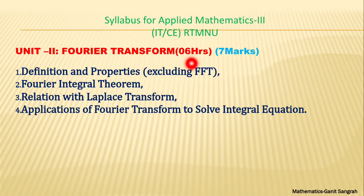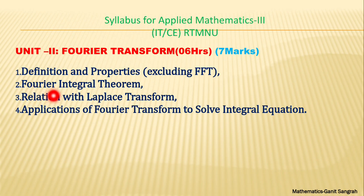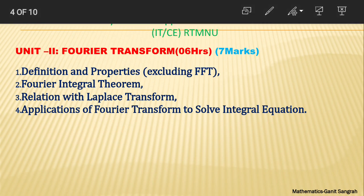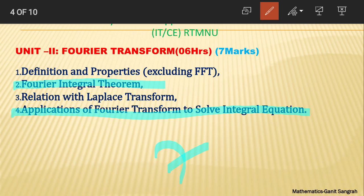In Fourier Transform, only one question comes — one in the either part and one in the or part — and this unit is for 7 marks. There are four topics: definition and properties of Fourier Transform, Fourier integral theorem, relation with Laplace Transform, and application of Fourier Transform to solve the integral equation. These topics will cover your 7 marks easily.